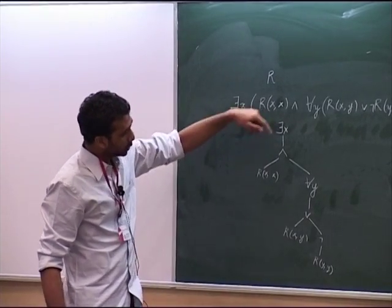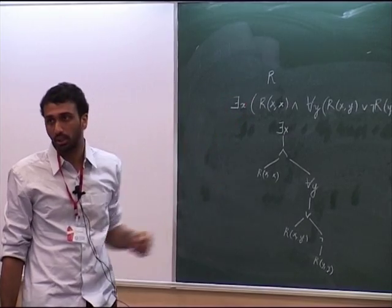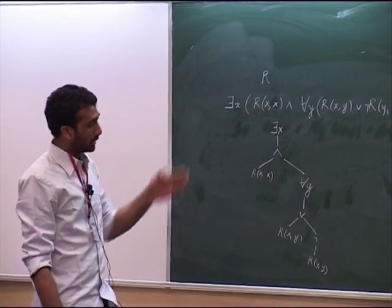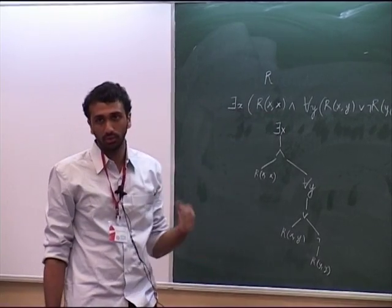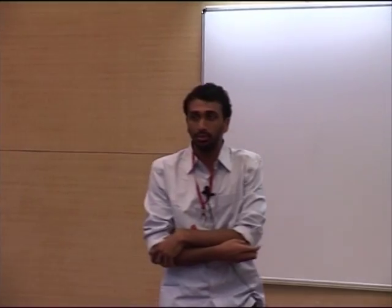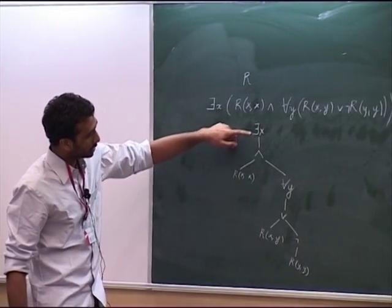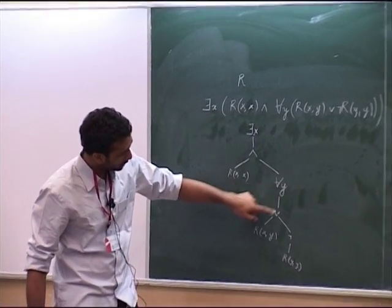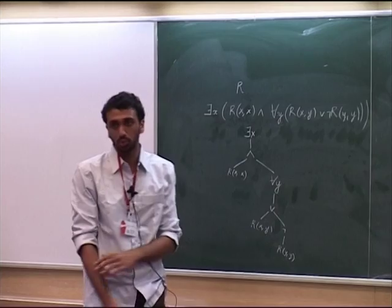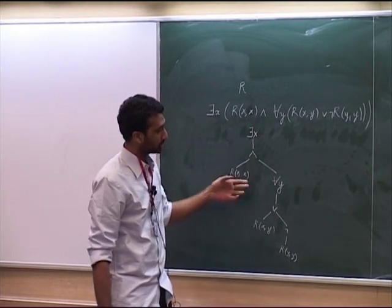We look at each path from the root to the leaf and find the number of quantifiers appearing along that path. The maximum number of quantifiers along any path from root to leaf is what is called the quantifier depth, nesting depth, or quantifier rank of the formula. In this example, one path has just one quantifier, whereas two paths have two, so the maximum is two. Therefore the quantifier rank of this formula is two.